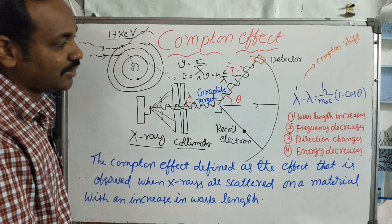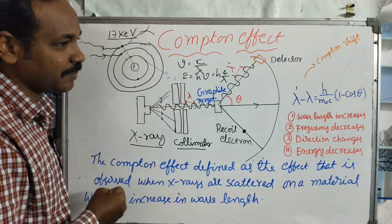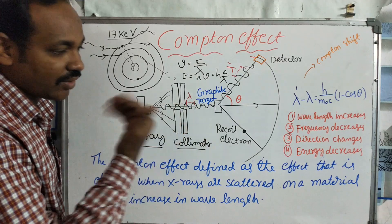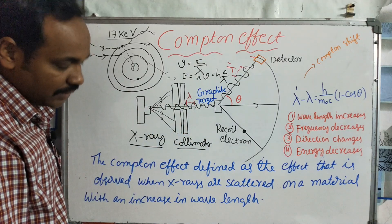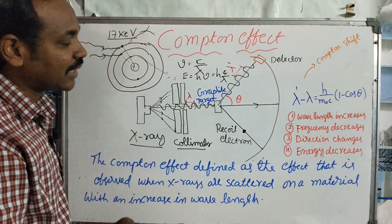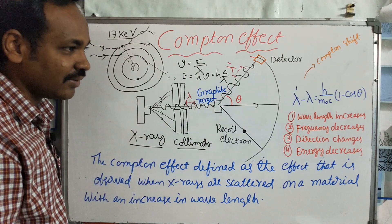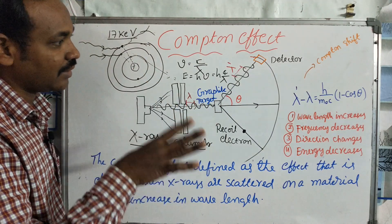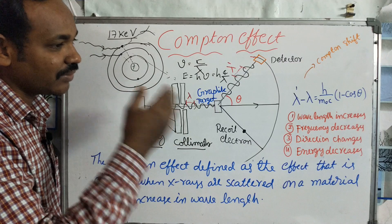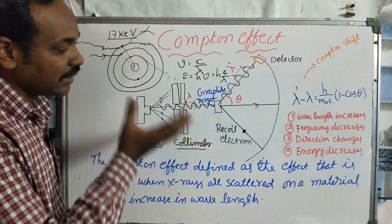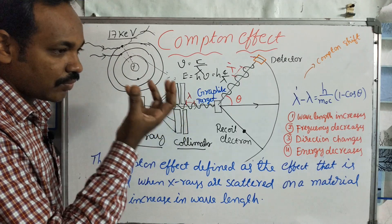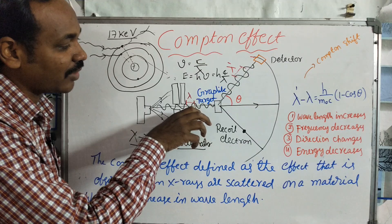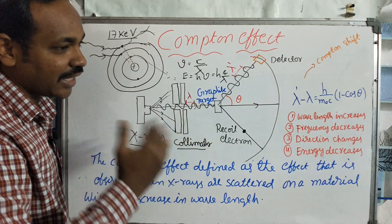This photon is a particle. The photon is a packet of energy — this is the dual-nature concept. This is a quantum mechanics concept. In classical mechanics we are familiar with the wave nature. But in quantum mechanics, a photon behaves as a particle. If you have a particle, it will transfer energy and momentum.